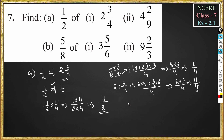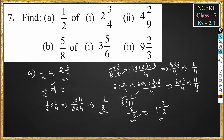Now we should convert this to a mixed fraction. So 11 divided by 8 — the remainder is 3. We write the whole number part as 1, the remainder in the numerator, and 8 in the denominator. So the answer is 1 and 3 by 8.